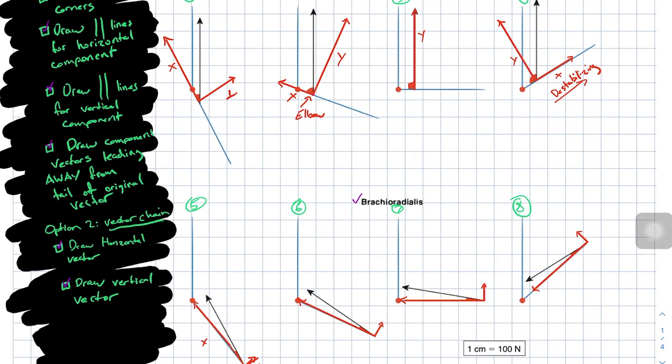We have solved all of the vector resolution problems here. We've done it for the biceps brachii and for the brachioradialis. Now if we check out the component vectors, look at the difference between the stabilizing component of the brachioradialis and the biceps brachii. We can see that as the biceps brachii goes through its full range of motion, we change from a stabilizing component in the x component to a destabilizing component.